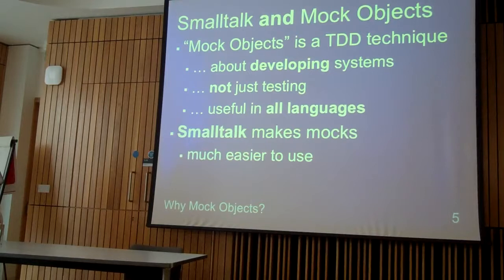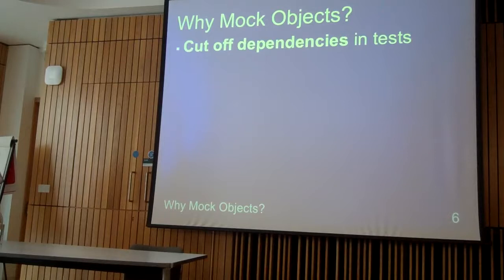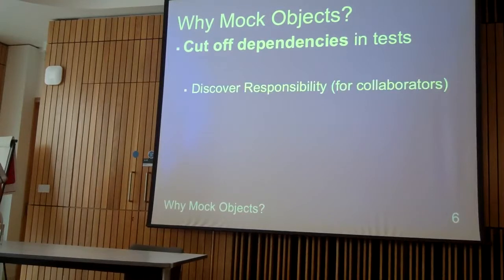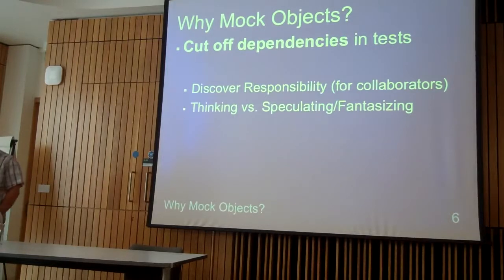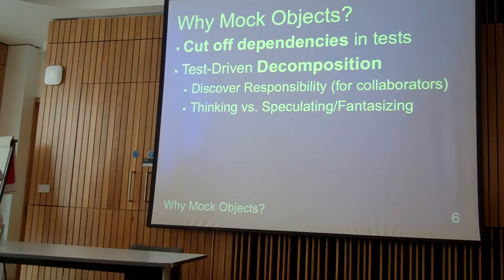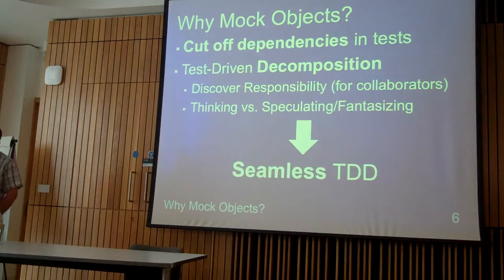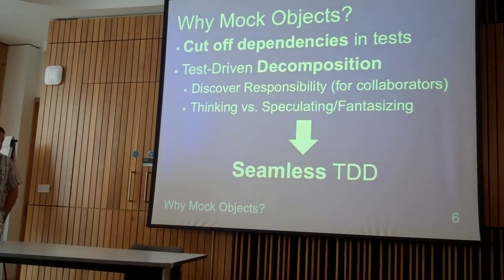That's what makes it easier, much easier. So, what's the problem, or what does Mokov offer? Why do we do that? They cut all dependencies in tests. They allow to discover responsibilities for cooperators and exclaimers. And they allow to think, instead of speculating, and make it happen about what the system should be. I think it can be called test-driven different conditions. In general, that provides what I have called seamless TDD — not corrupted by not-so-test-driven techniques. I like TDD very much, and I think it is just an amazing methodology.